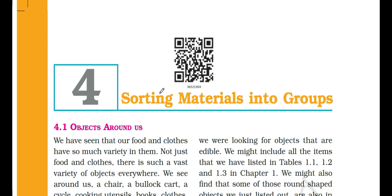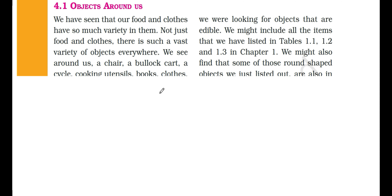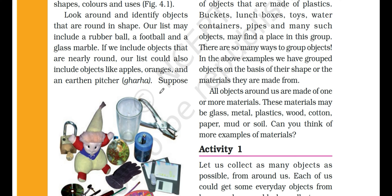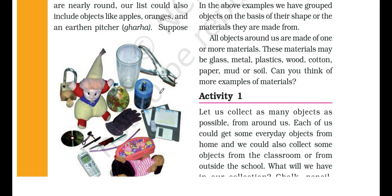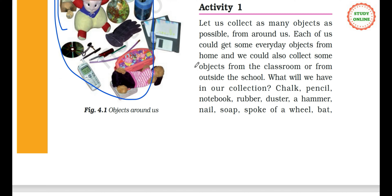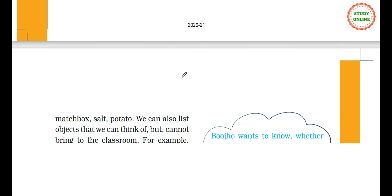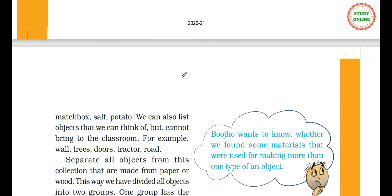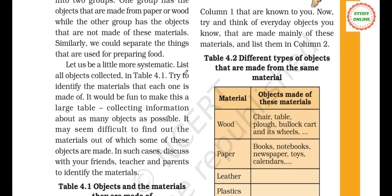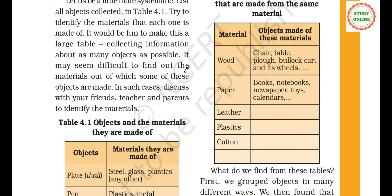First, section 4.1 Objects Around Us — we have already read this and I have explained it in English and in Hindi. We also did some activity to find materials used for making more than one type of object. For example, from wood we can make a table, plow, and other objects.